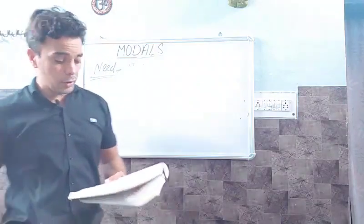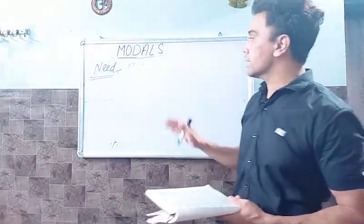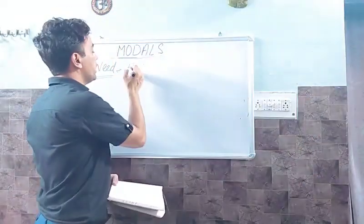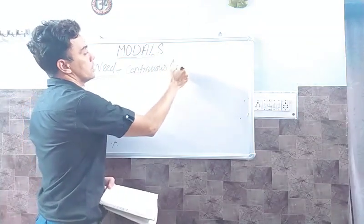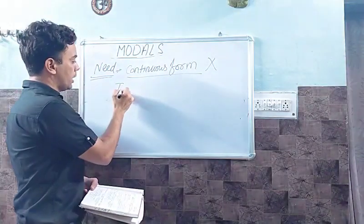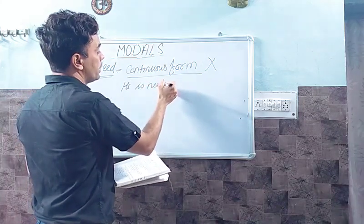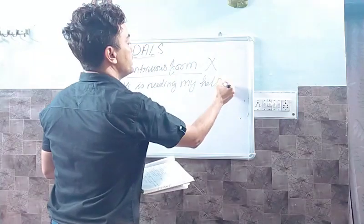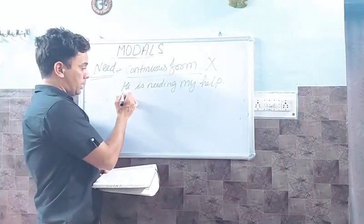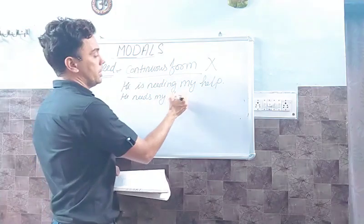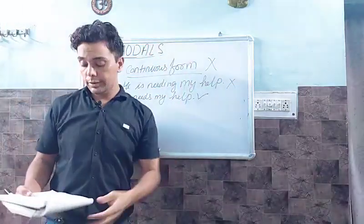The third use: we cannot use 'need' in the continuous form — that means we cannot add 'ing.' For example, 'He is needing my help' is wrong. The correct forms are: 'He needs my help,' 'He needed my help,' or 'He will need my help.' We cannot use 'needing' — the continuous form with 'need' is incorrect.